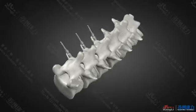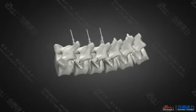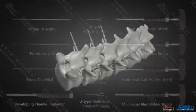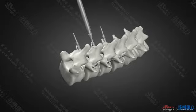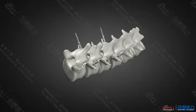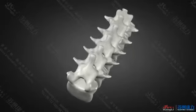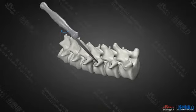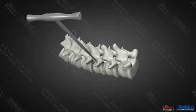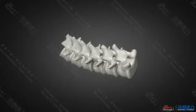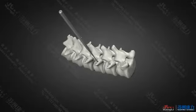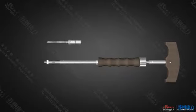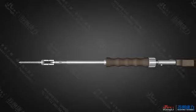Repeat the above to make the other five implementation holes and insert the developing needles. Use the image system to detect the effective implanting holes. Step 4: implant the U-type screw. Remove the developing needle, then drill with the screw tap to a proper depth, then remove the screw tap. Use the nail holder to install the multiple axle pedicle screw.